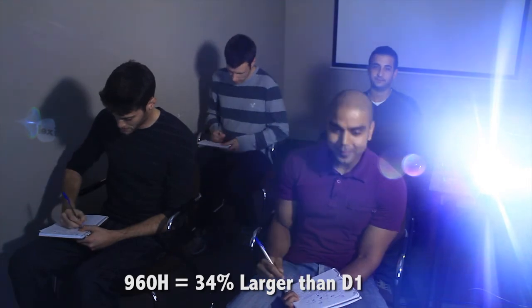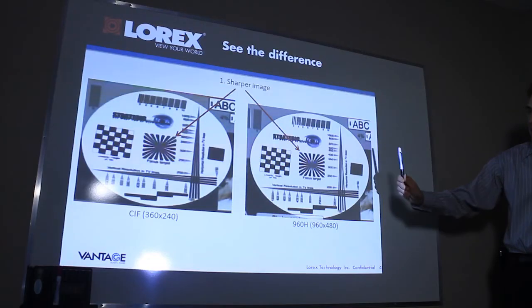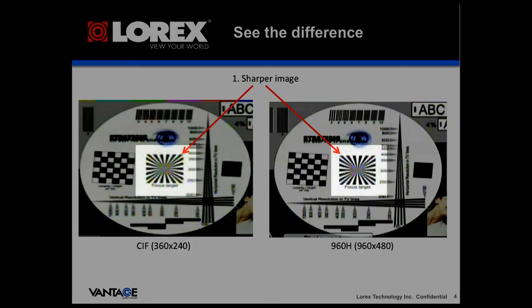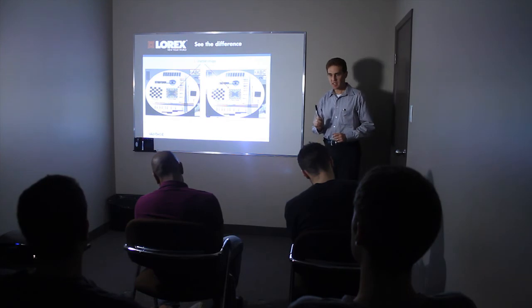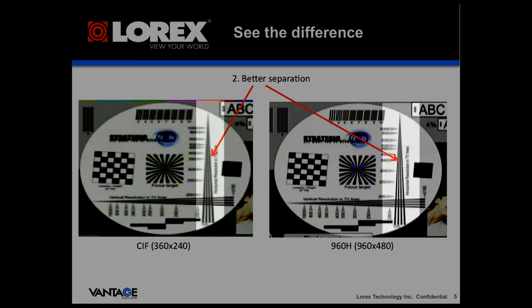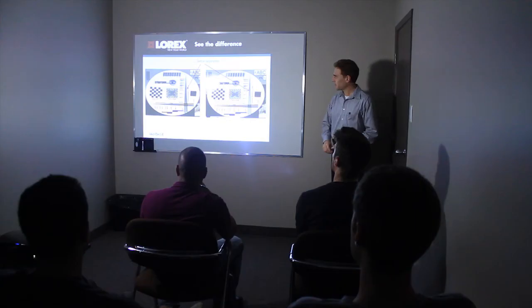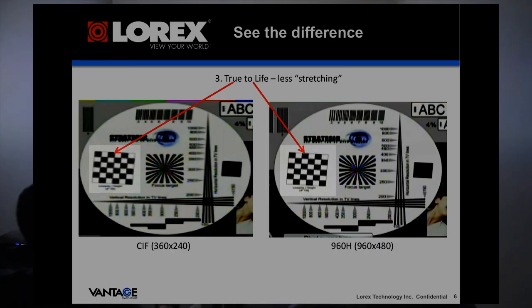Let's see the difference. We have two images as recorded on the same DVR — one set to SIF resolution, the other set to 960H resolution. You can see how dramatically sharper the image is with 960H. Second, separation — the separation between these four lines is much clearer on the 960H image and you can see it further up to the top. And finally, true to life — you have less of a stretching impact. Look at the checkerboard on both images. This is less stretched.